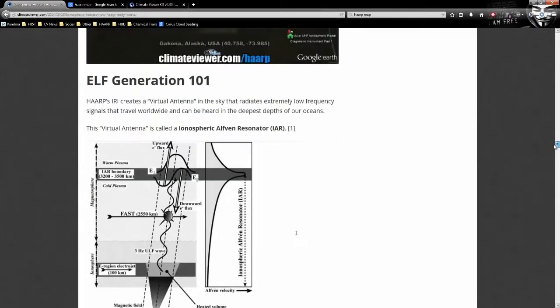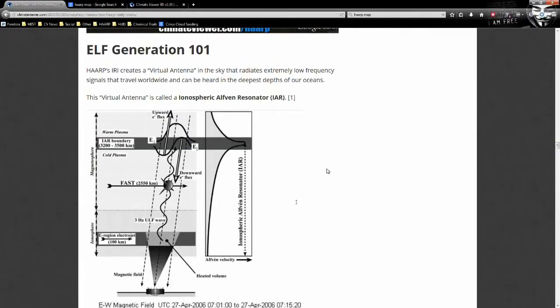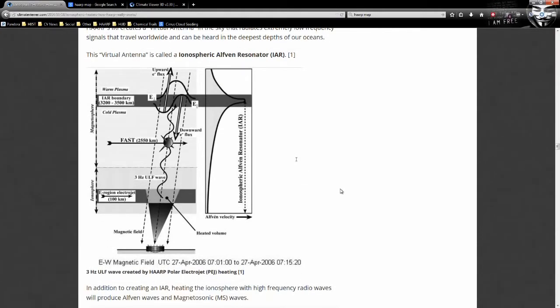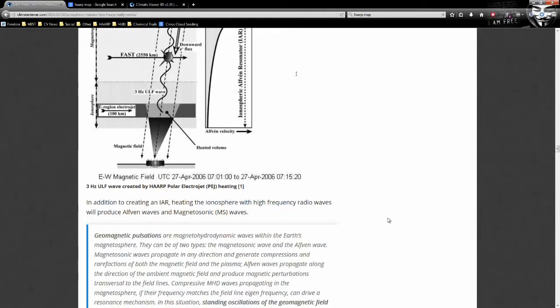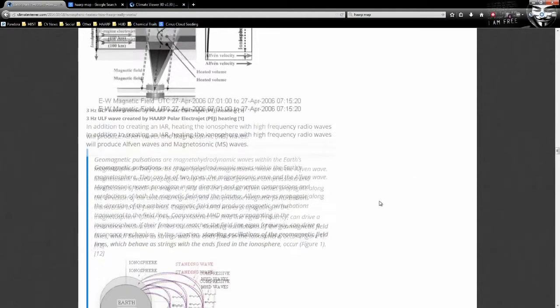The ionospheric Alfven resonator is using the ionosphere as an antenna, so it could be considered a geophysical weapon. That's a term that has been used and thrown around quite a bit.